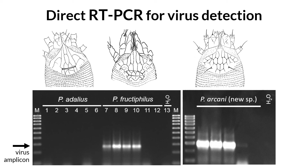This phylogenetic tree is simplified, showing just some of the populations that form the major clades in our analysis. First of all, we identified two distinct lineages within the confirmed vector Phyllocoptes fructiphilus. We don't know yet if the new lineage collected in Nebraska is capable of vectoring the virus, and if so, at what efficiency.